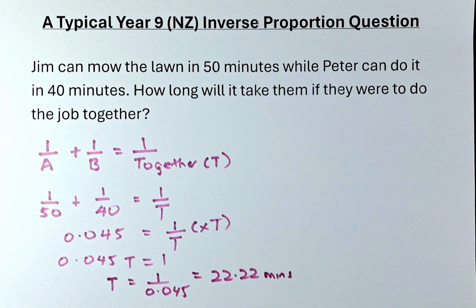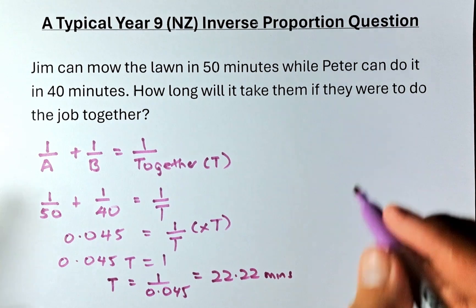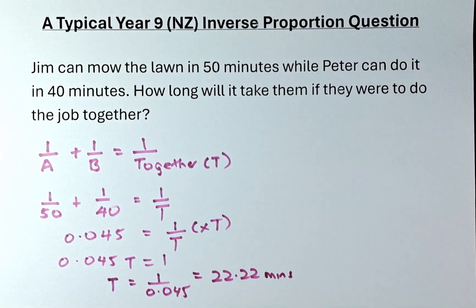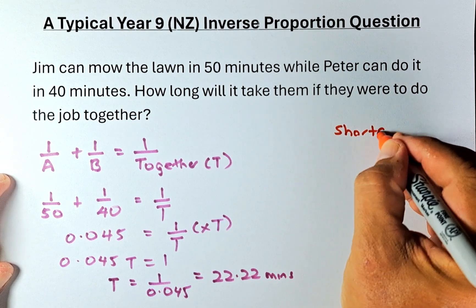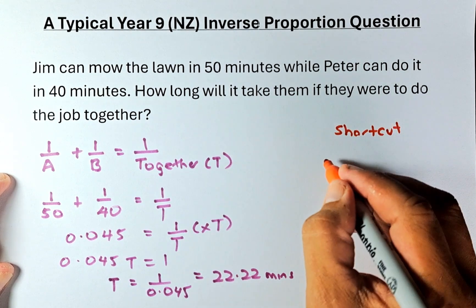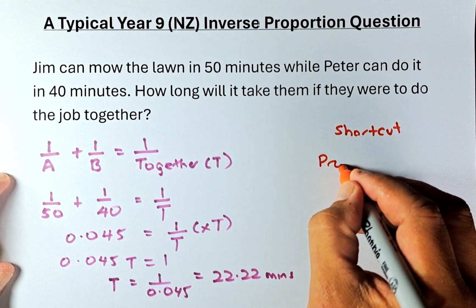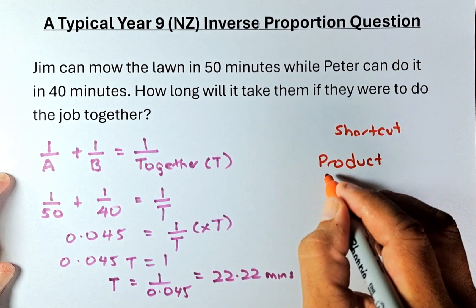The other way to do it is a lot easier. The shortcut method, I'm going to write in another color pen. Shortcut method. It's just going to take the product of the time divided by the sum.